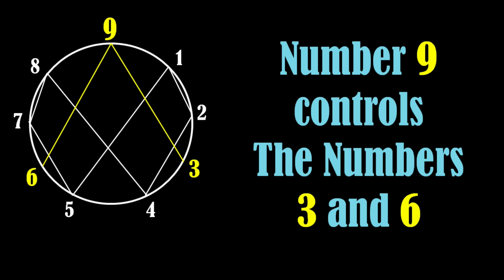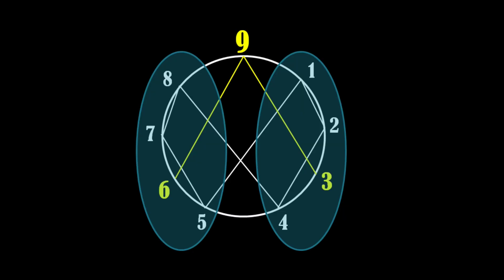Interestingly, number 9 appears to govern the behavior of numbers 3 and 6. Numbers 1, 2 and 4 are controlled by 3, while numbers 8, 7 and 5 are controlled by 6. Thus, number 9 seems to have control over all the numbers in this pattern.